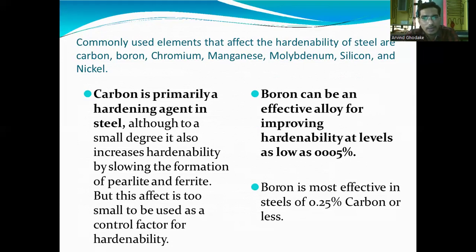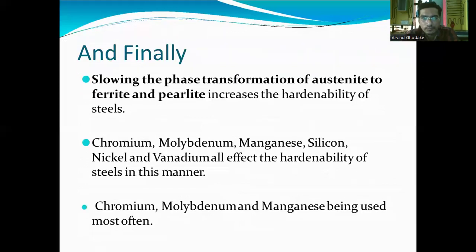Boron can be an effective alloying element for improving hardenability at a level as low as 0.5%. Boron is most effective in steels with 0.25% carbon or less. Slowing the phase transformation of austenite to ferrite and pearlite increases the hardenability of steel. Chromium, molybdenum, manganese, silicon, nickel, and vanadium all affect hardenability in this manner, with chromium, molybdenum, and manganese being used most often.